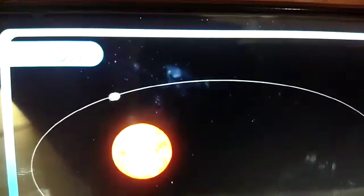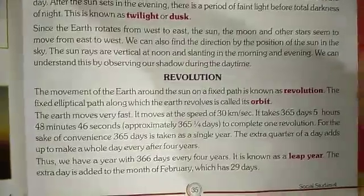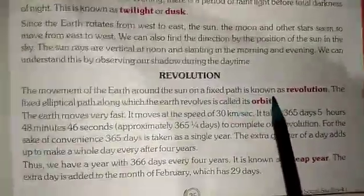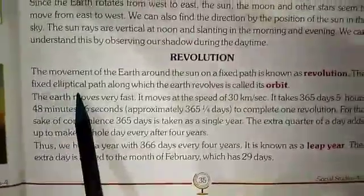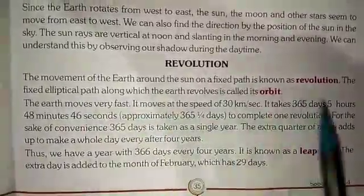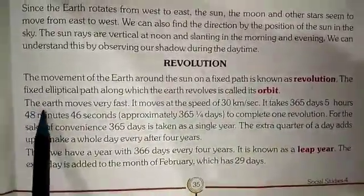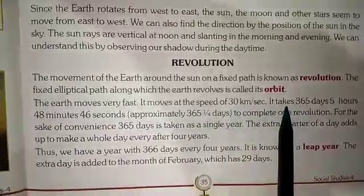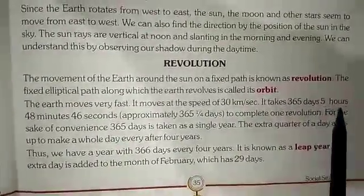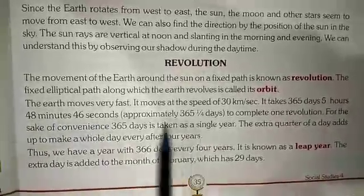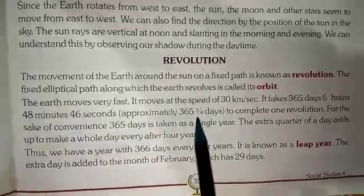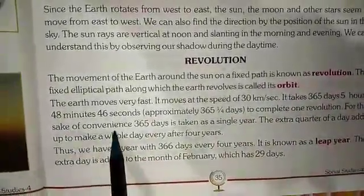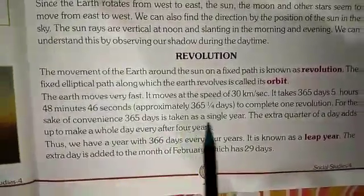The movement of the earth around the sun is called revolution. The fixed elliptical path along which the earth revolves is called its orbit. The earth moves very fast — at the speed of 30 km per second. It takes 365 days, 5 hours, 48 minutes, and 46 seconds — approximately 365 and one-quarter days — to complete one revolution. For the sake of convenience, 365 days is taken as a single year.